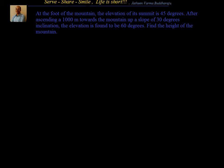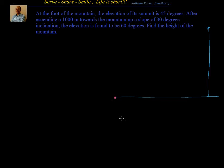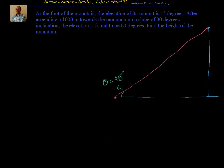To understand this better, let us draw the diagram. This is the ground. The summit is somewhere up there. This is the foot of the mountain. From the foot of the mountain, the elevation of its summit is 45 degrees — we take that angle as 45 degrees.